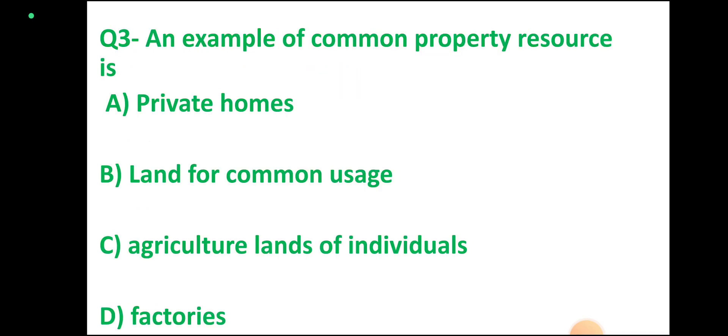Question number 3: An example of common property resources is private homes, land for common uses, agriculture land for individuals, or factories. Correct answer: land for common uses, option B.